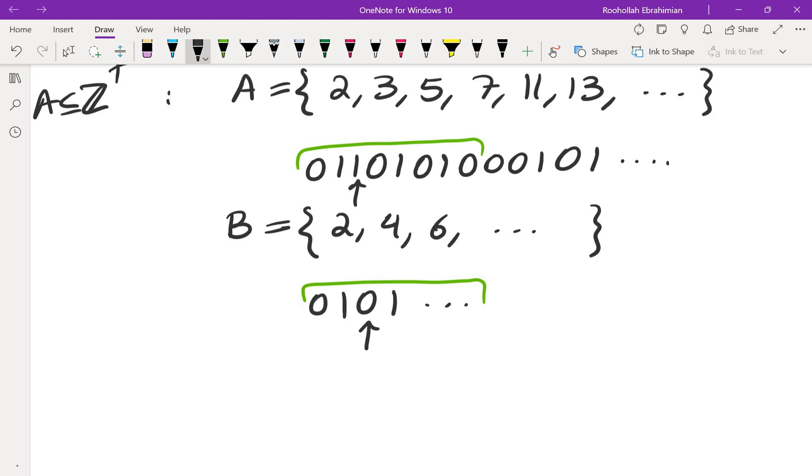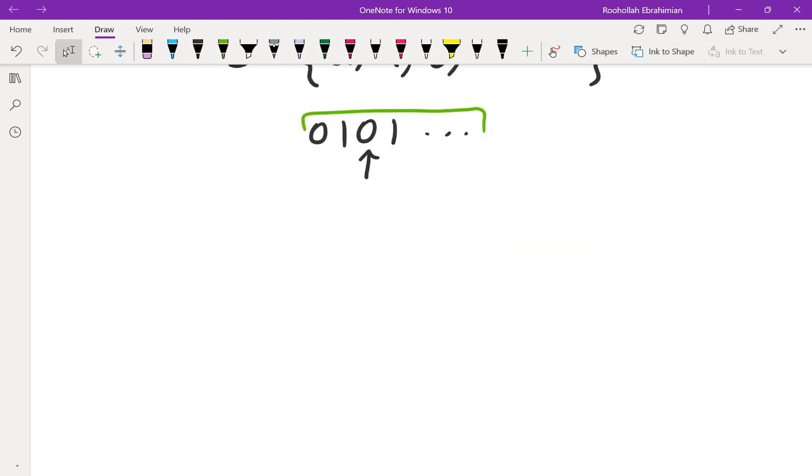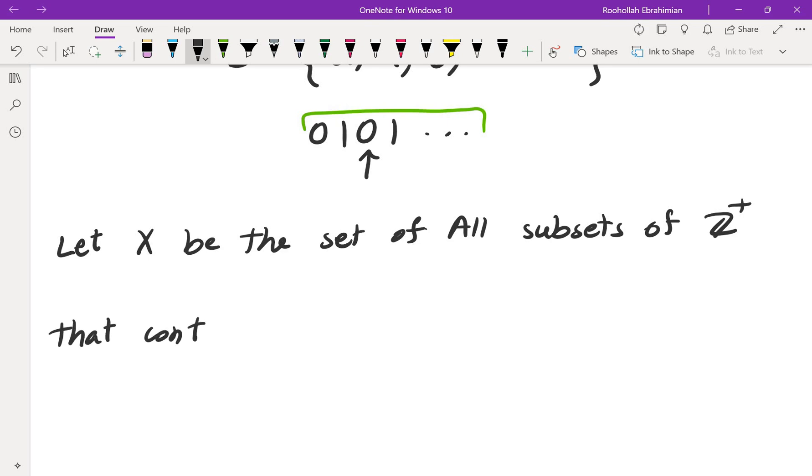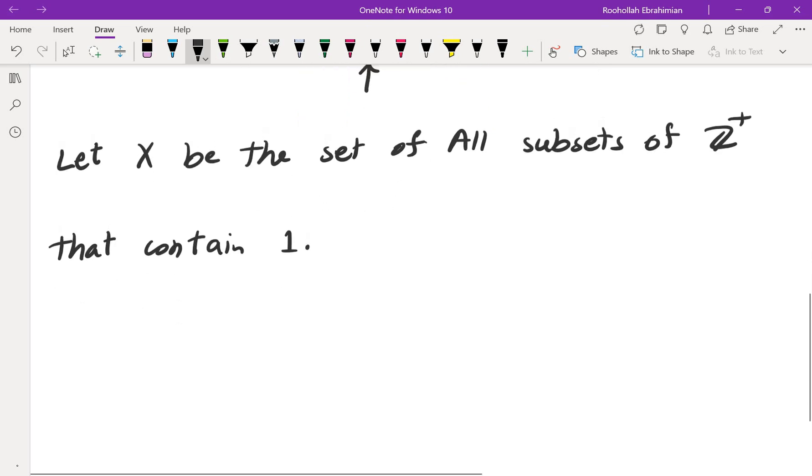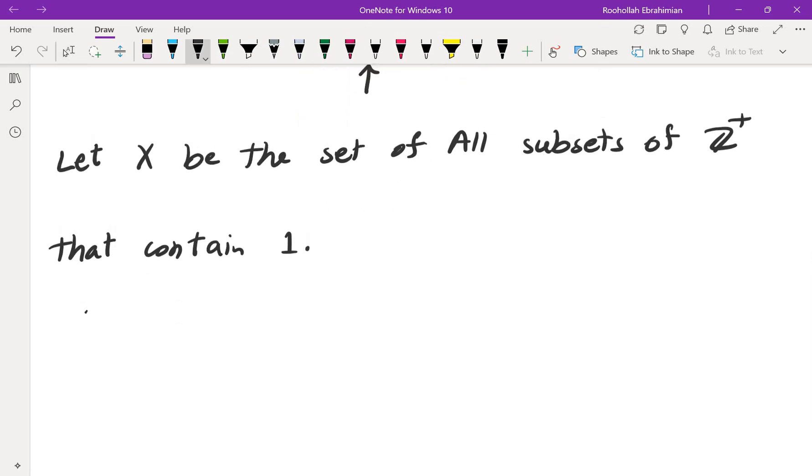Because I wanted to create numbers that are positive integers, I wanted to start from one. Always I wanted to start from one. So here's now how we're going to deal with that. So let X be the set of all subsets of Z plus that contain one. So clearly, X would be an uncountable set. So X is uncountable.